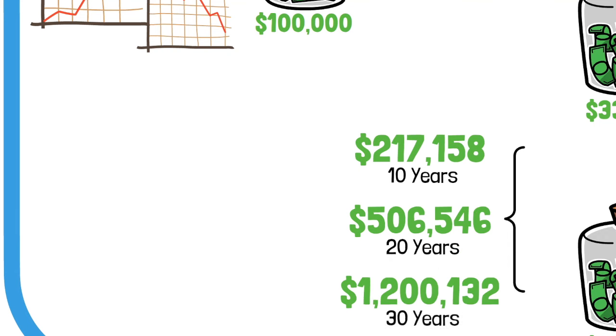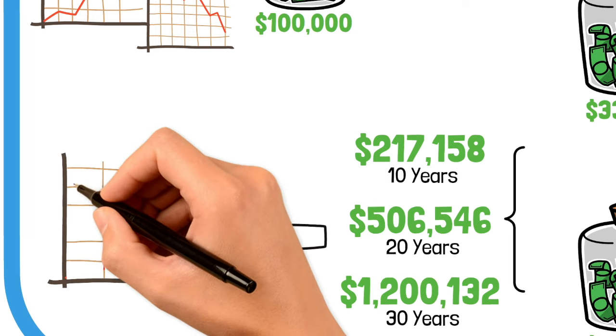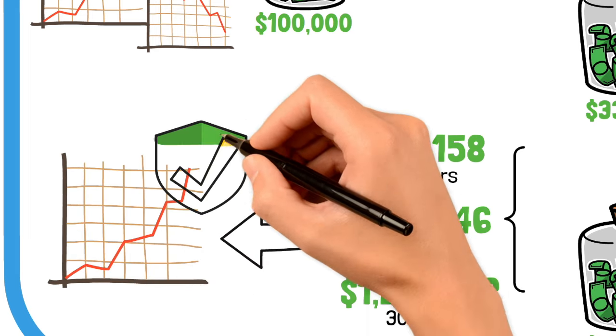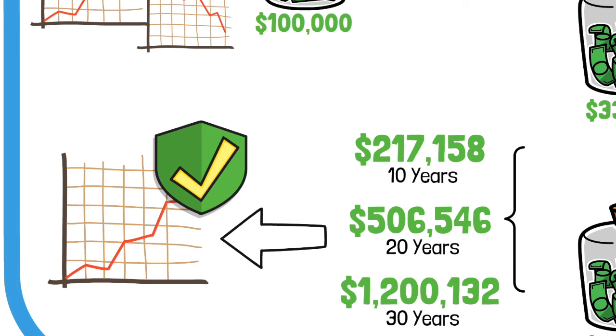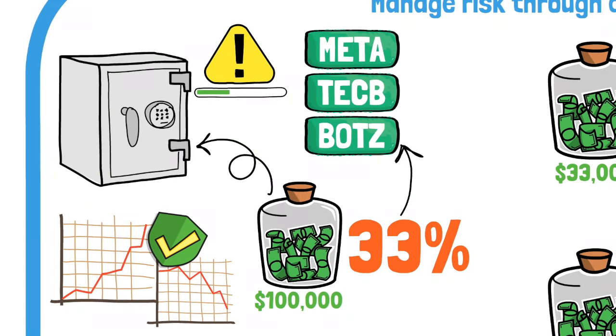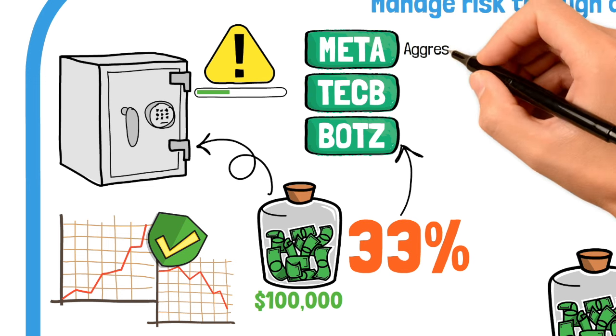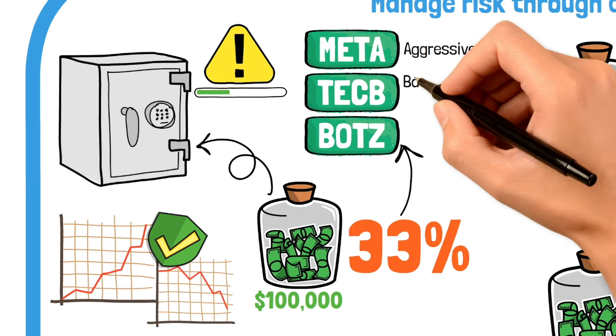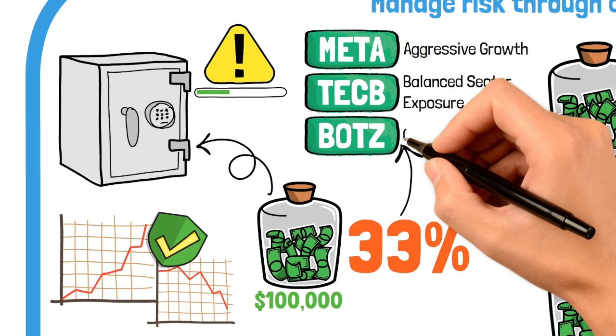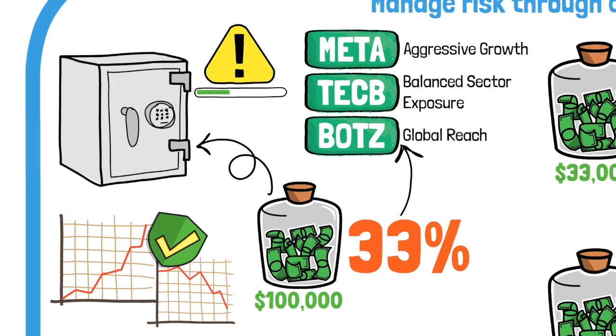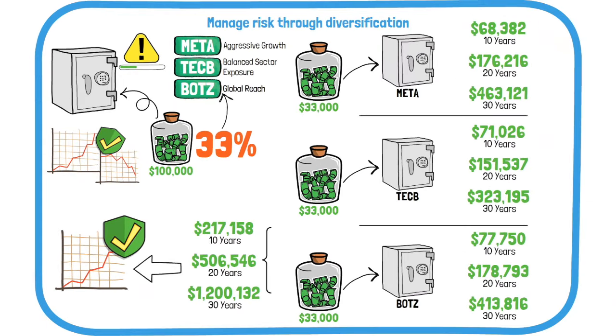This diversified approach yields a substantial growth trajectory, providing stability and reducing the impact of market fluctuations. By diversifying your $100,000 investment equally among META, TECB, and BOTZ, you benefit from the strengths of each ETF. META's aggressive growth, TECB's balanced sector exposure, and BOTZ's global reach create a powerful combination. This strategy ensures that your portfolio can capitalize on advancements in AI technology while maintaining a manageable level of risk.